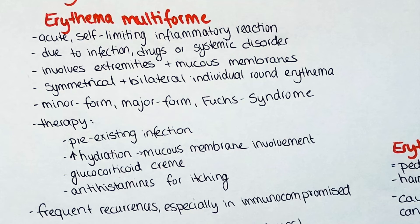Other causative agents are physical agents like radiotherapy, cold weather or sunlight. The rash presents as a symmetrical and bilateral rash with individual round lesions, usually involving the extremities and mucous membranes. Erythema multiforme minor is a milder form, which is typically less severe and resolves after a few weeks without treatment. Erythema multiforme major is the more severe form; it can be life-threatening as it involves the mouth and eyes. A third variant is the Fuchs syndrome, which involves primarily mucosal surfaces and is often difficult to diagnose.